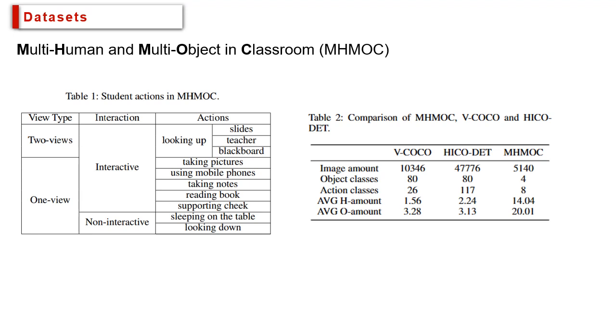In MHMOC, each student is labeled with a one-hot label of the eight actions shown in the table. By comparing with two HOI datasets, we can find the MHMOC contains a much larger average human amount and average object amount, which is the general situation of the classroom.